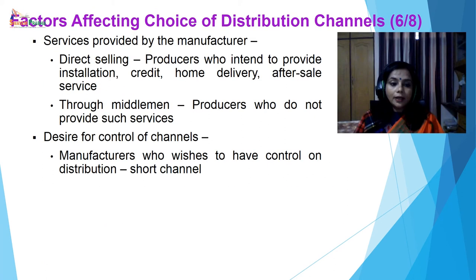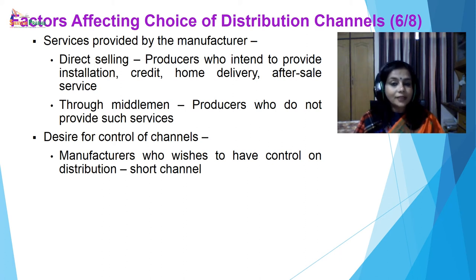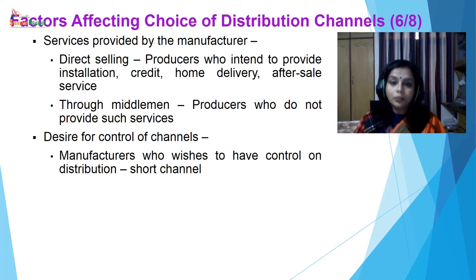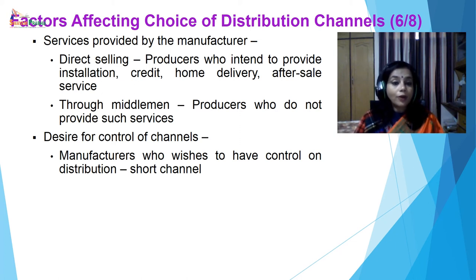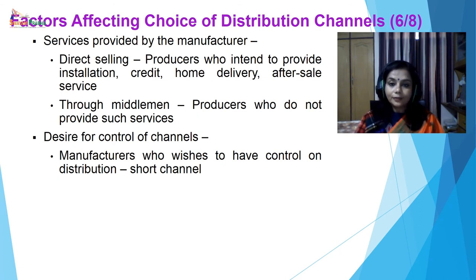The next factor is services provided by the manufacturer. In case of direct selling, producers who intend to provide installation, credit, home delivery, and after-sales service — that will be possible through direct selling. If the producers do not provide such services, then it is better to go through middlemen. Desire for control of channels: if the manufacturer wishes for more control on distribution, then they should go for a short channel or direct selling.